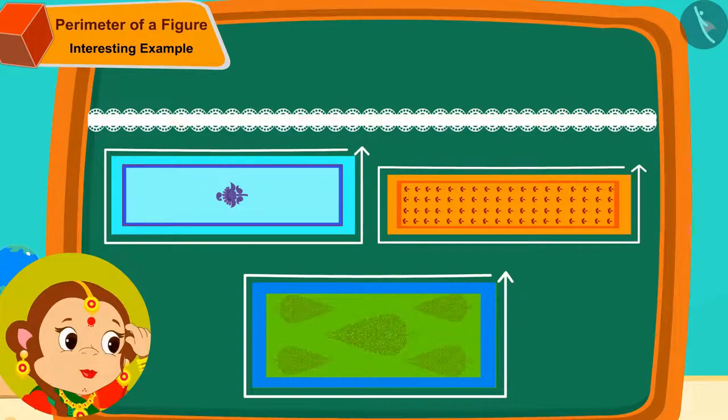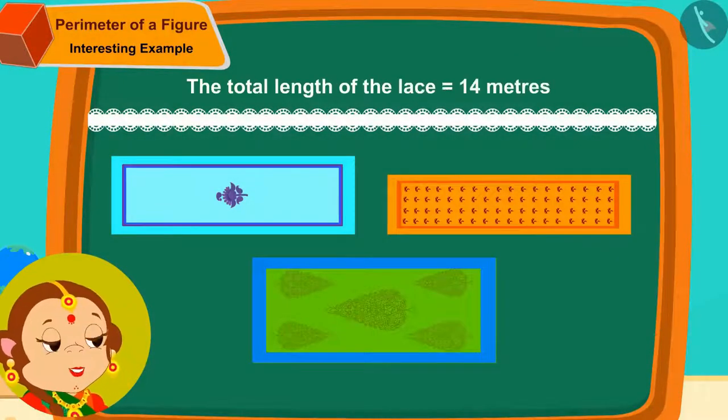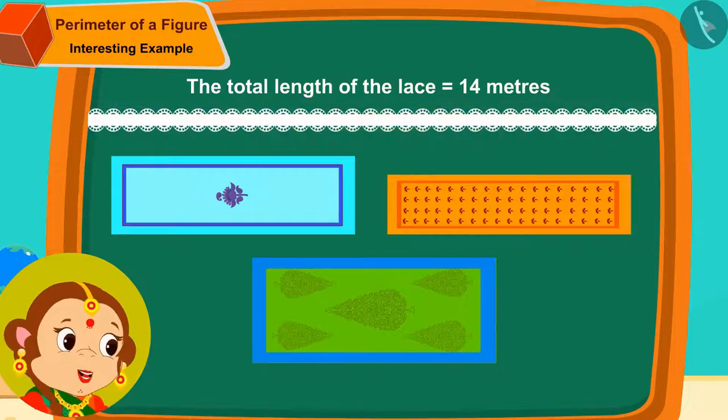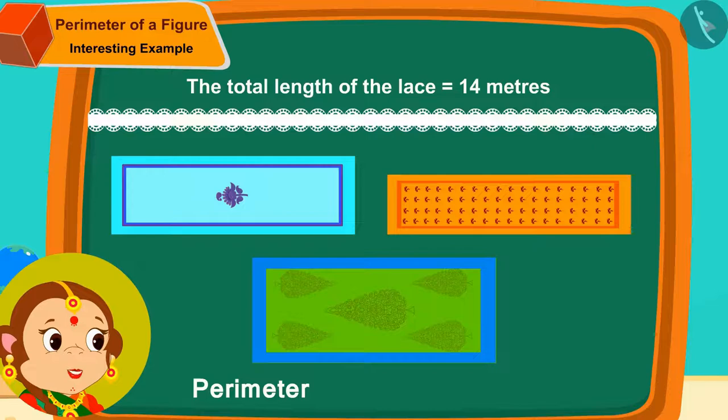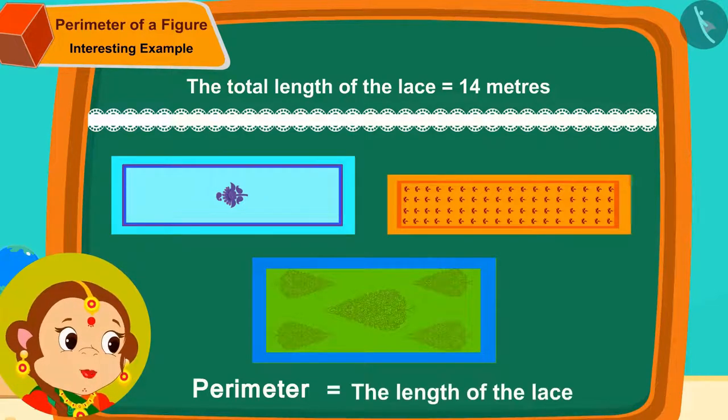Banno thought, the total length of this lace is 14 meters. And if I want to apply this lace on all sides of the sheet, then the perimeter of the sheet will be equal to the length of the lace required.